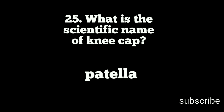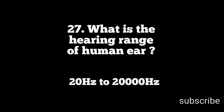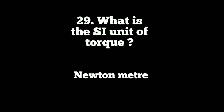What is the gravity at the center of the earth? What is the hearing range of the human ear? 20Hz to 20,000 Hz. Which device is used to measure radioactivity? Geiger counter. What is the SI unit of torque? Newton meter.